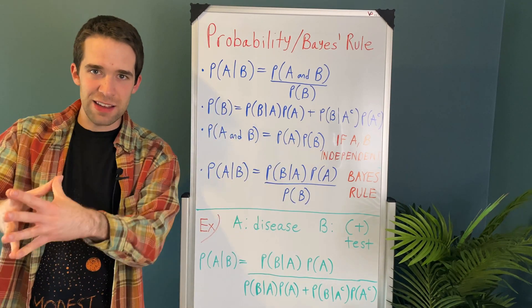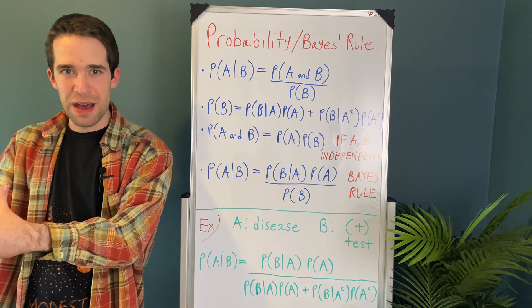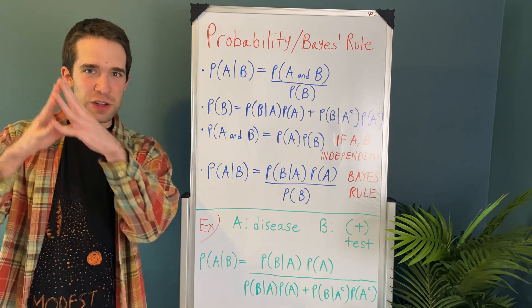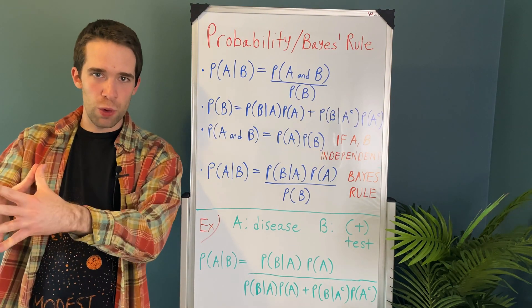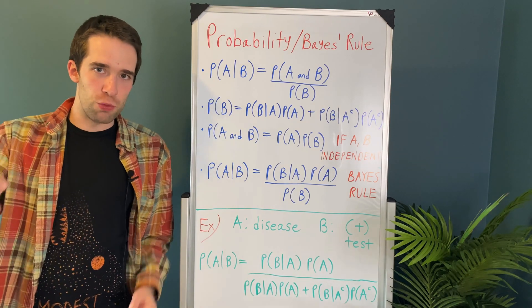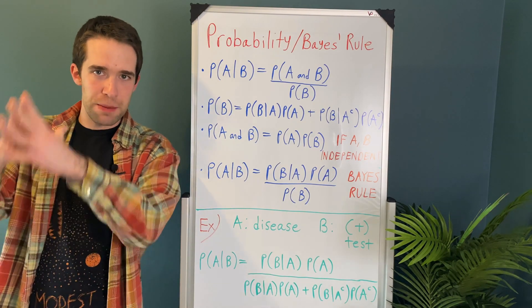Again, this is only the case when events A and B are independent. And this doesn't necessarily directly relate to Bayes' rule. But this is probably the single most important rule in probability other than Bayes' rule.